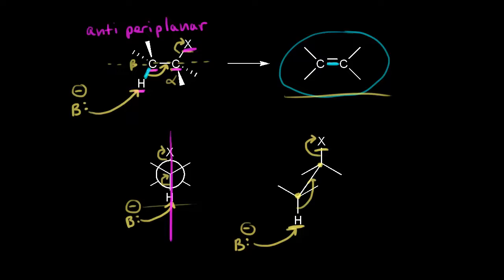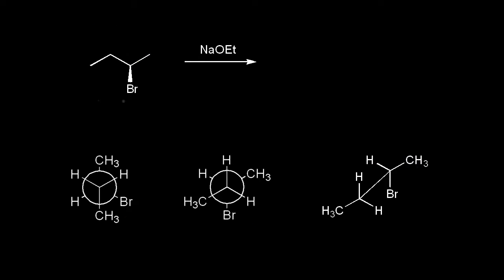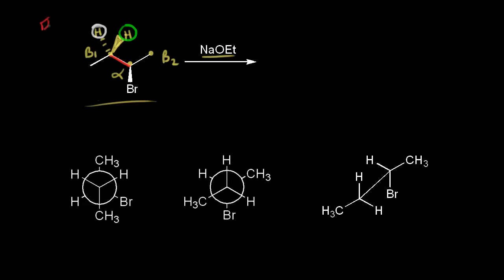Let's look at an example with an alkyl halide reacted with sodium ethoxide, which is a strong base. The carbon bonded to the halogen is our alpha carbon, and the carbons bonded to the alpha carbon are the beta carbons — beta one on the left and beta two on the right. We'll focus on beta one. Beta one carbon has two hydrogens: one on a wedge, highlighted green, and one on a dash, highlighted white. We're going to stare down the beta one–alpha carbon bond to get a Newman projection, where the green hydrogen goes up and to the right, the white hydrogen up and to the left, and a methyl group straight down.